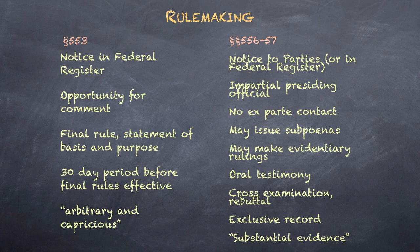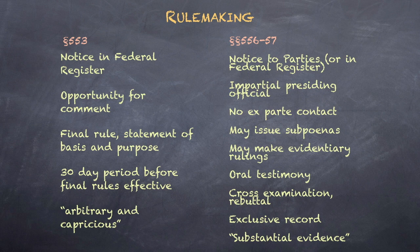Contrastingly, under Sections 556-557, there is to be notice to the parties — it may be in the Federal Register too, but it must include the parties. There is to be no ex-parte contact with the presiding official. The presiding official may issue subpoenas, make evidentiary rulings, and receive oral testimony. Cross-examination and rebuttal will be available to a party. A decision is to be made on an exclusive record developed at the hearing, and judicial review is under the Substantial Evidence Standard.